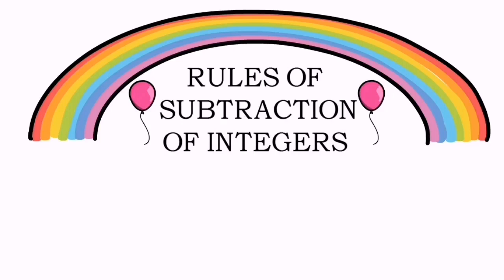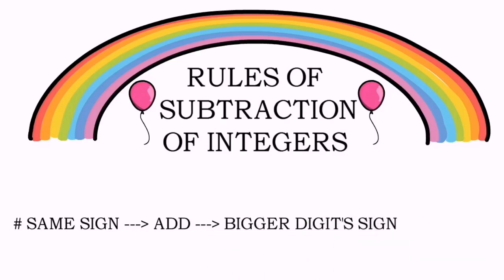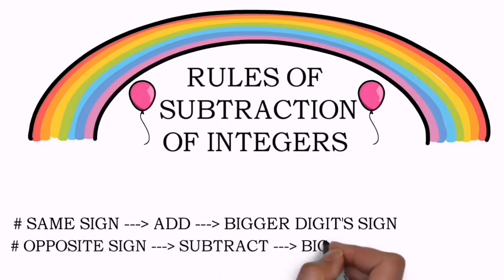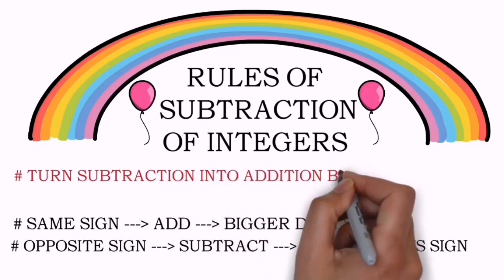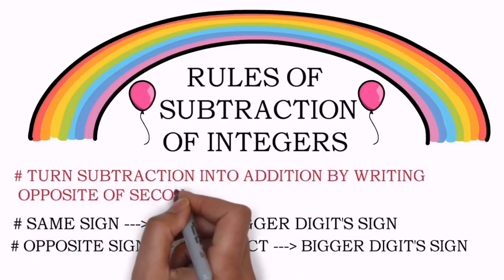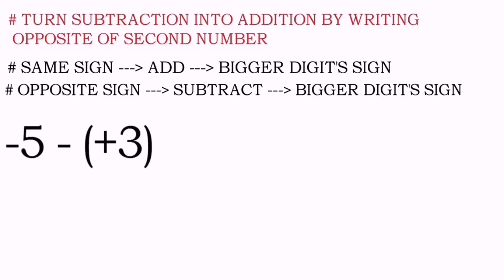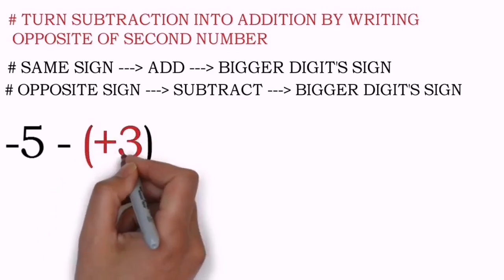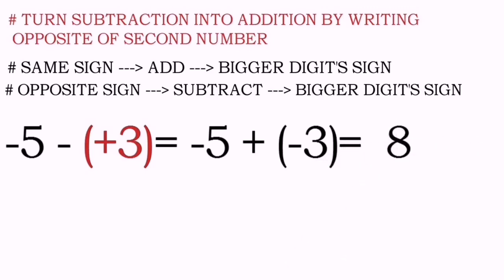In the rules of addition: if we have the same sign we add the numbers and give the bigger digit's sign; if we have opposite signs we subtract and give the bigger digit's sign. For subtraction, we never actually subtract - we turn the subtraction into addition by writing the opposite of the second number. For example, after the subtraction sign the second number is positive 3, so we write its opposite, negative 3, and turn the subtraction into addition.